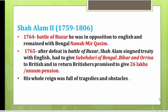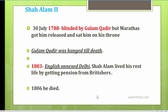Shah Alam became a pensioner of the Britishers. Overall, his rule was full of tragedies and obstacles — the invasion of Abdali, the Third Battle of Panipat, the Battle of Buxar, so many defeats. In 1788 he was blinded by Ghulam Qadir, but with the aid of the Marathas he was released and restored to his throne, and Ghulam Qadir was executed. In 1803 the Britishers annexed Delhi, and Shah Alam had to live the rest of his life as a British pensioner until his death in 1806.